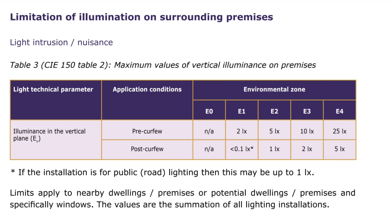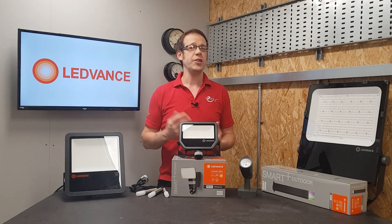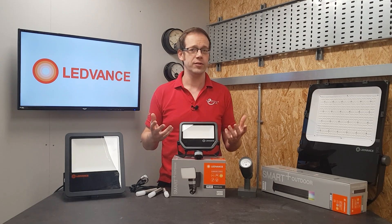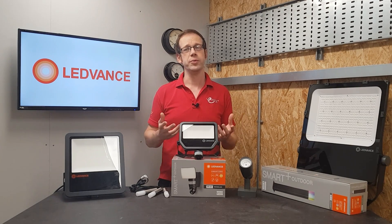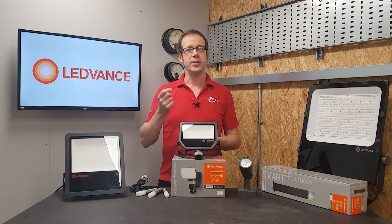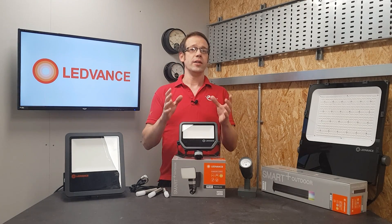So the maximum value on our calculation surface was 1.54 lux, which means we're well within the limits for zones E1 to E4, but couldn't apply this solution in zone E0. That's the guidance for maximum illumination levels onto neighboring properties — it's pretty straightforward. If you're not sure which environmental zone the area you're working in falls within, simply contact the local planning authority and they'll be able to tell you.